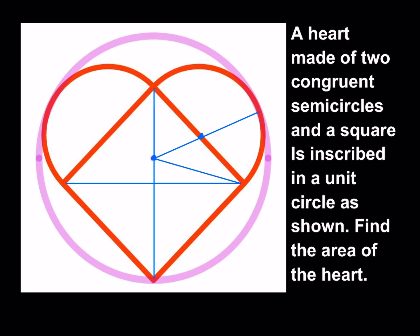So let's call the radius of the semicircle R. We have R and R here, making this length 2R. The strategy is going to be pretty interesting — this is a special puzzle so it requires a special method. I'll be making one more connection, with your permission, because that'll hopefully make things more clear.